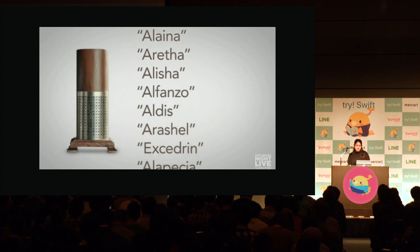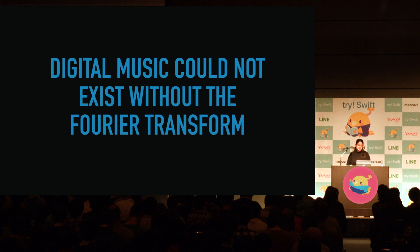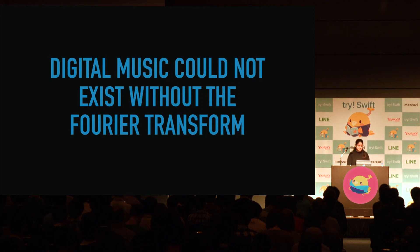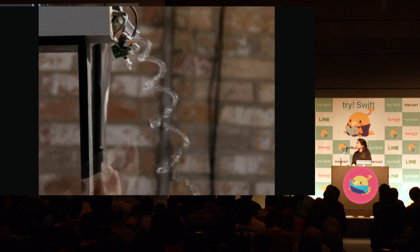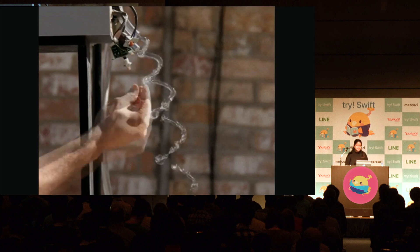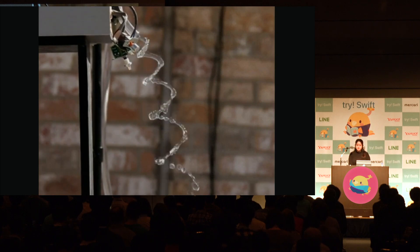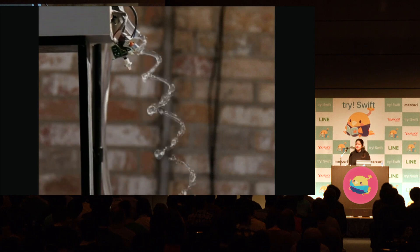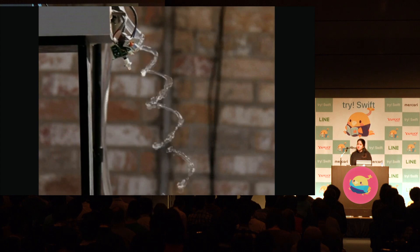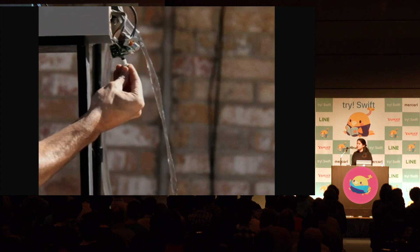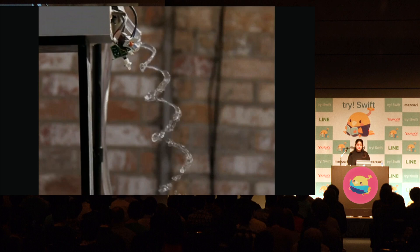Now that we have some background on DSP, let's take it a step further. Consider the music we stream every day — digital music could not exist without the Fourier transform. Before we analyze what the Fourier transform is, let's break it down to how we experience sound. This is what happens when a stream of water is exposed to a very loud 24-hertz speaker recorded at 24 frames per second. The sound can be thought of as a sum of various sine waves or pure tones. Any sound or signal can be represented as a collection of sine waves with the right frequency and phase. By mapping out the frequencies in the sound, you build up the fundamental components of the sine waves it contains. This map is the Fourier transform of sound.